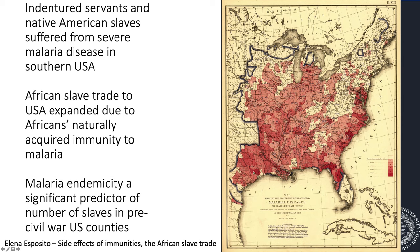This map from 1870 shows the relative burden of mortality from malaria across the then United States. You see the North has very little malaria deaths compared to the South, especially South Carolina, Georgia, Florida, Mississippi, and Alabama, which had very heavy malaria deaths. The malaria transmission in the South led the colonists and landowners to value African slave labor more greatly.